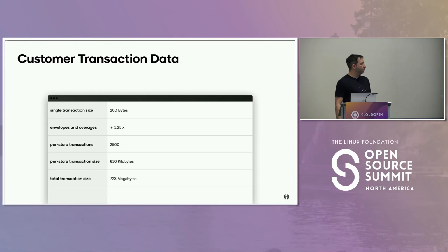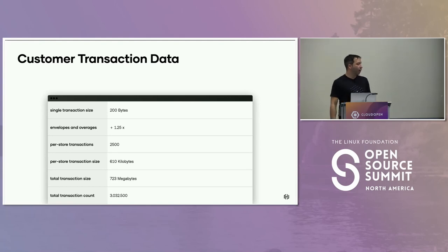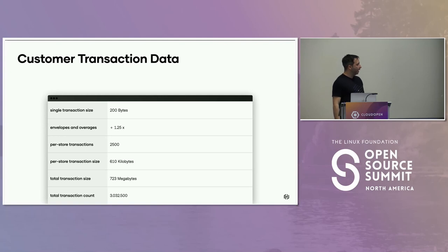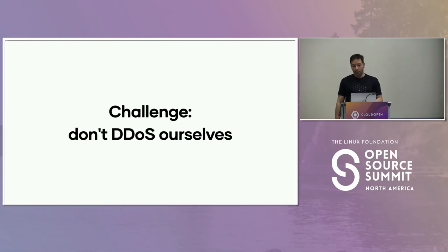Here's the problem. 723 megs is not a lot of data. What is a lot of data is 3 million API calls, especially because all of these stores are in a single time zone and they all close at the same time or within 15 minutes of each other. You cannot build an API that withstands that many inputs without having any brokering in between. We didn't, so we DDoSed ourselves.